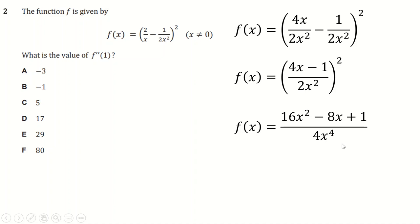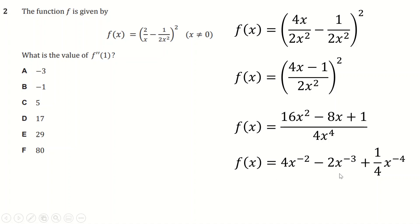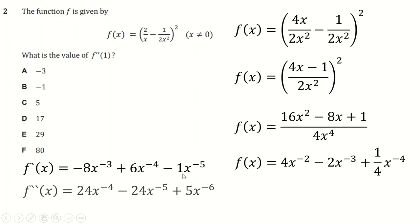Square the denominator: 2 squared is 4, x squared is x to the 4. Then divide each term by 4x to the 4 — 16 over 4 is 4, x squared divided by x to the 4, subtract the powers. Now differentiate using the power rule: minus 2 times 4 is minus 8, drop the power by 1. Evaluating at x = 1, all the powers become 1, giving an answer of 5.